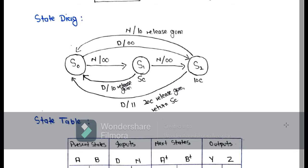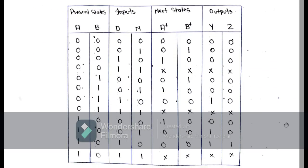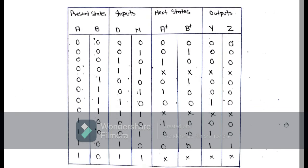Another possibility is that on S1 we already have 5 cents. When on S1 we insert a dime instead of a nickel, we have a total of 15 cents, so with output 1 0 — meaning release candy and no return change — we move to S0. This is the explanation of our state diagram. Now by using that state diagram we can make the state table.